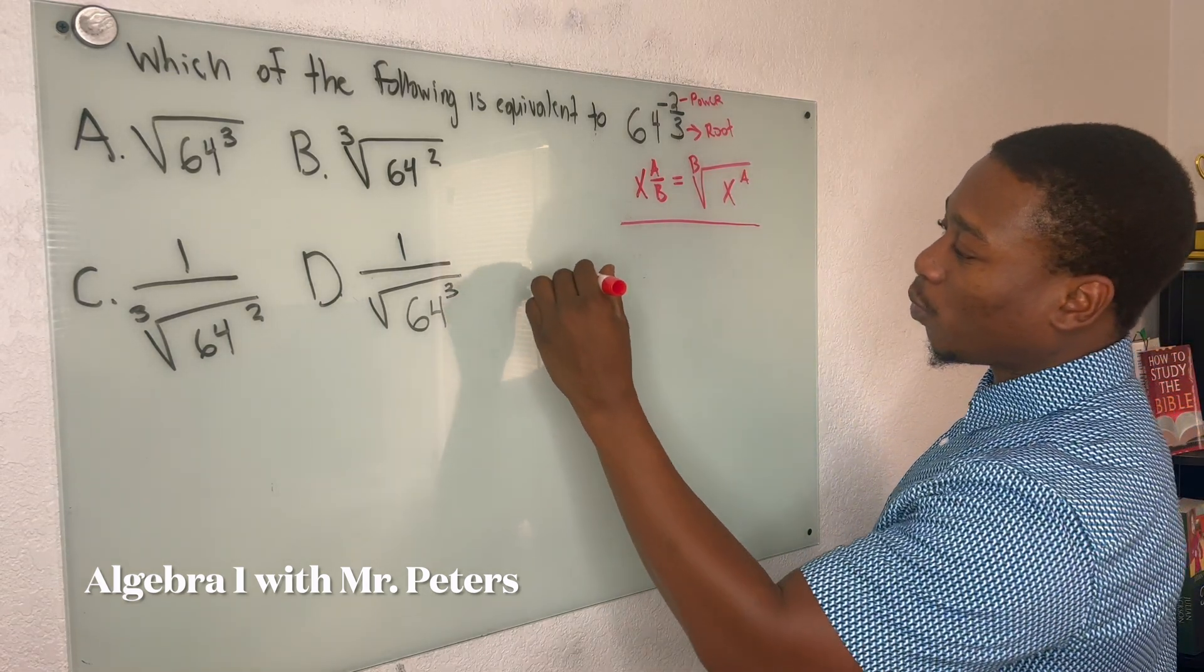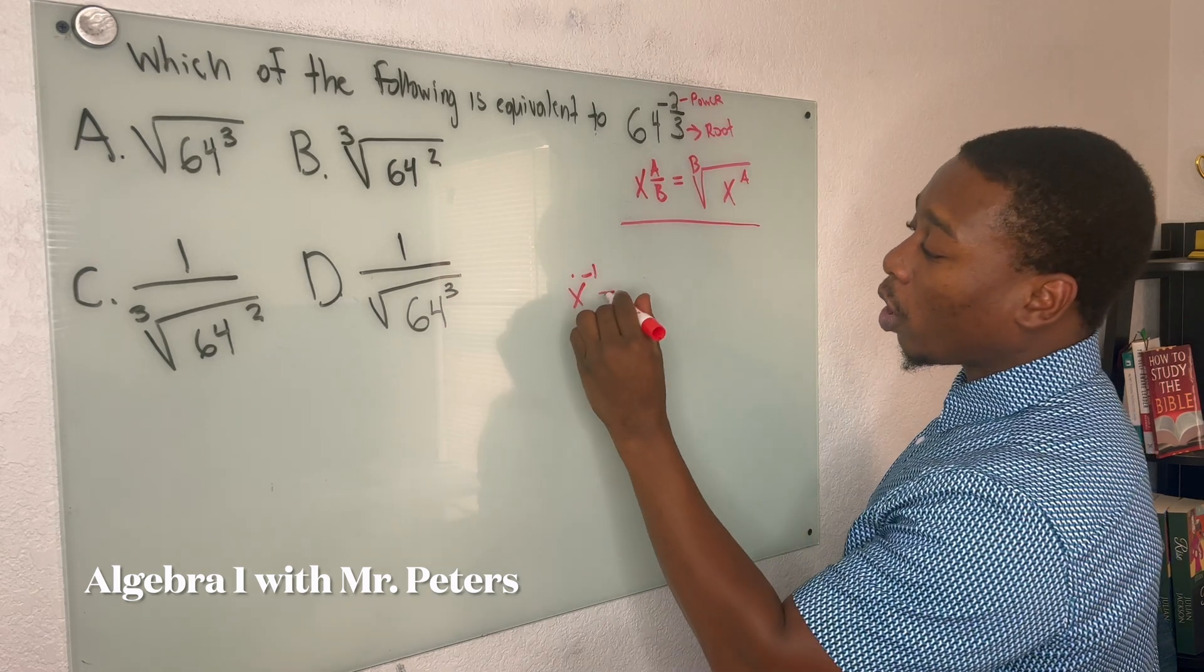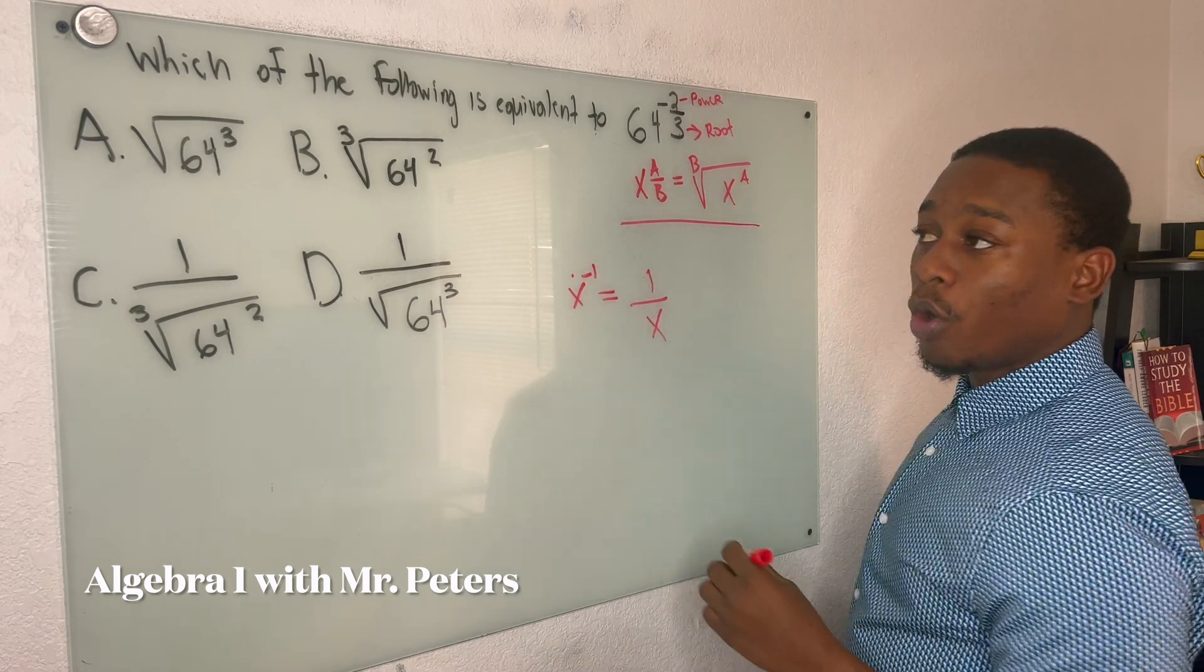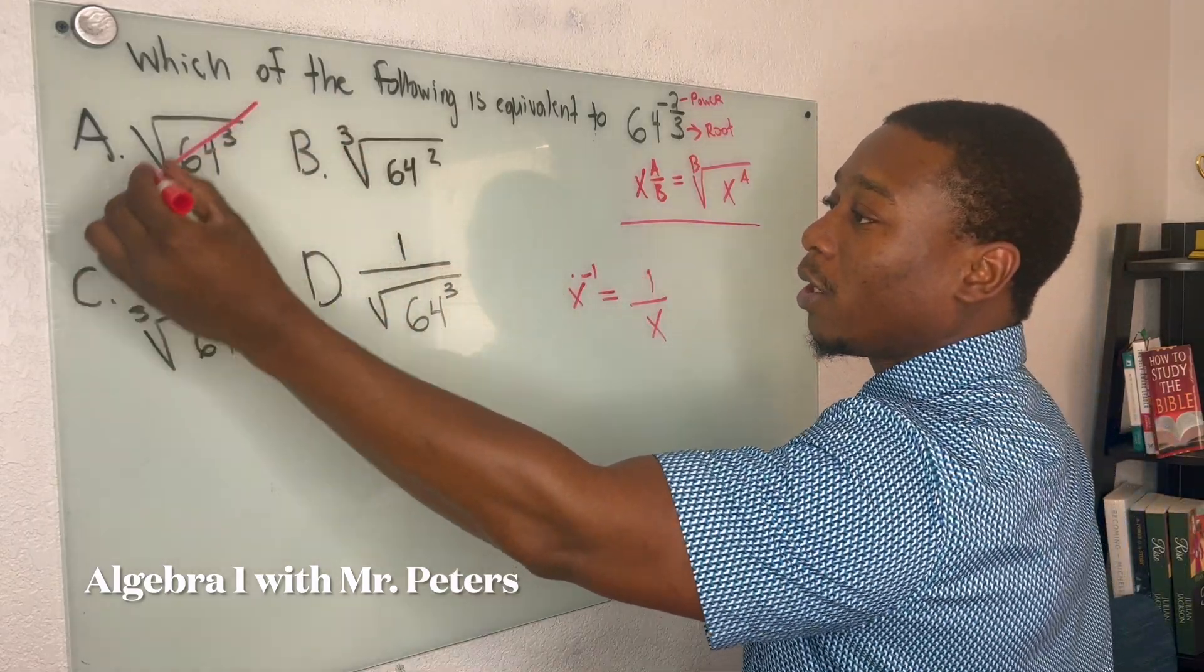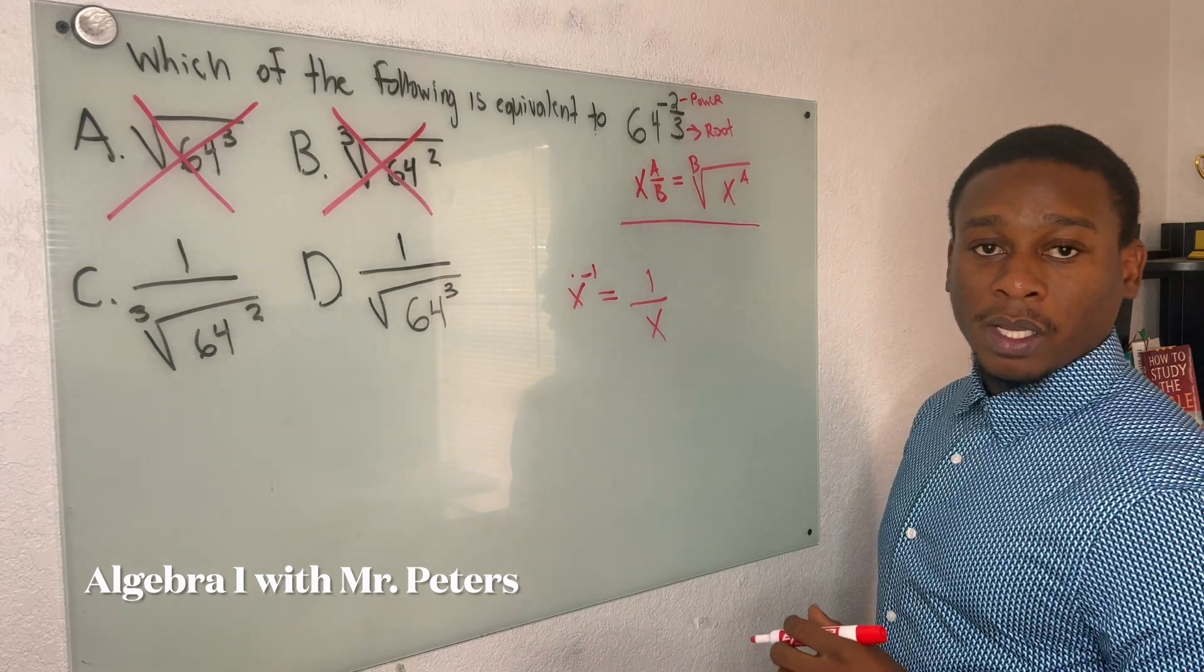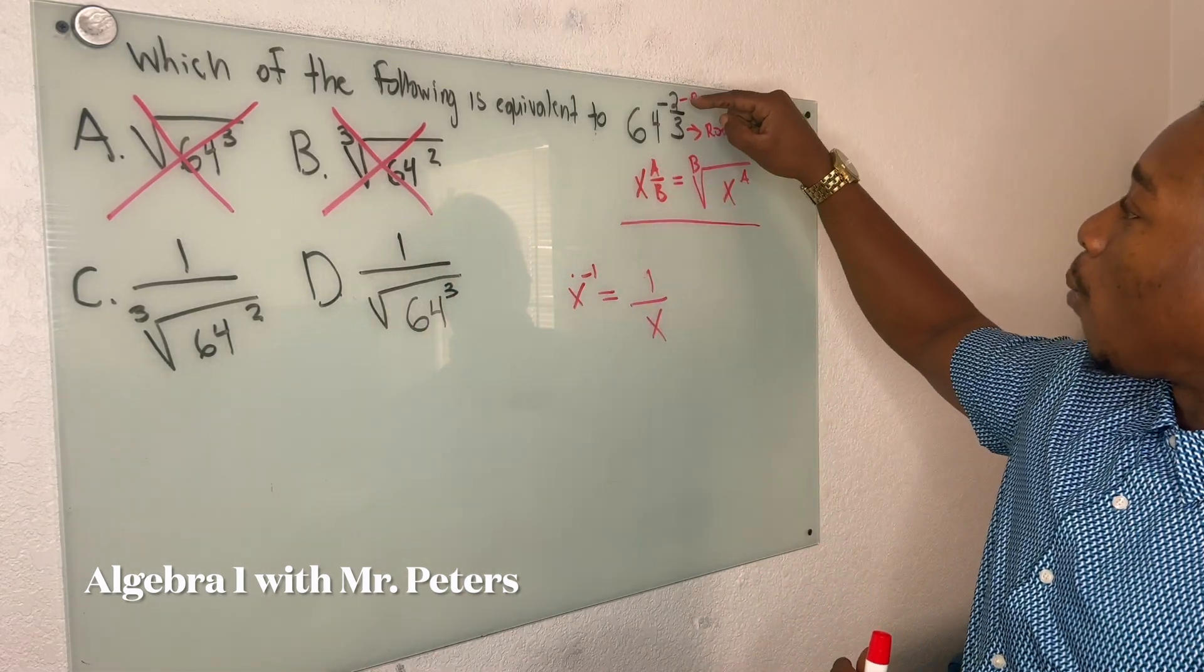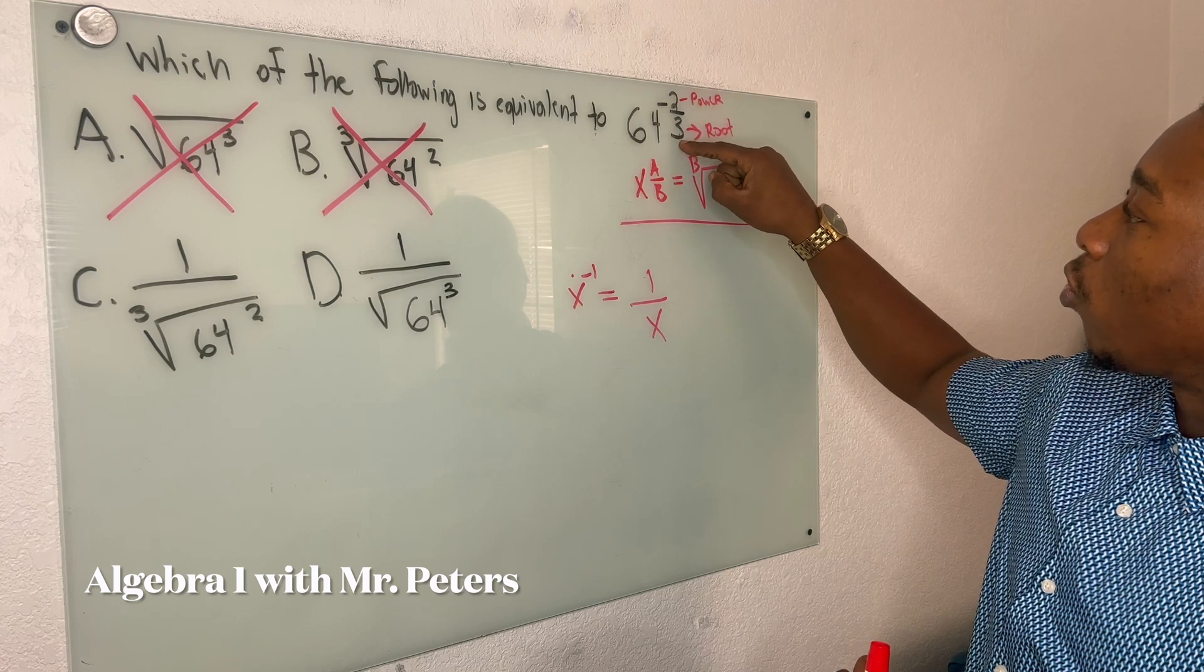So when we have a negative exponent, right? So we have x to the negative 1. We also have to remember the reciprocal 1 over x. So A is gone because we didn't take the reciprocal. Same thing with B. Now we just got to focus on C and D and make sure that our power and our roots are correct.